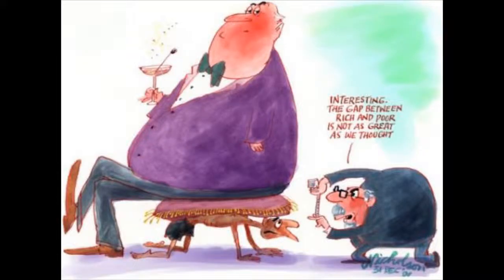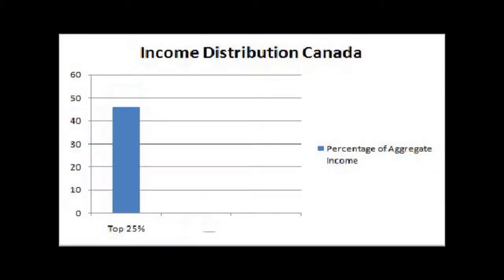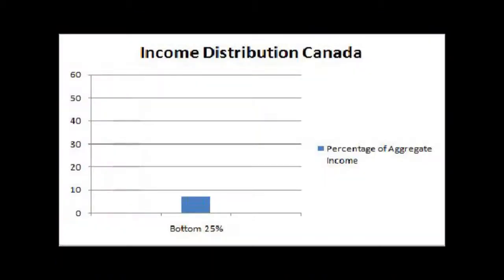With capitalism comes poor income distribution. They say the rich get richer and the poor get poorer. The top 25% highest incomes own more than 45% of Canada's total income, while the bottom 25% own just over 7% of Canada's total income.